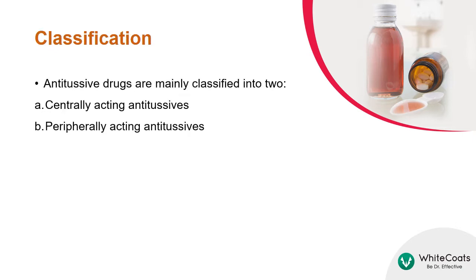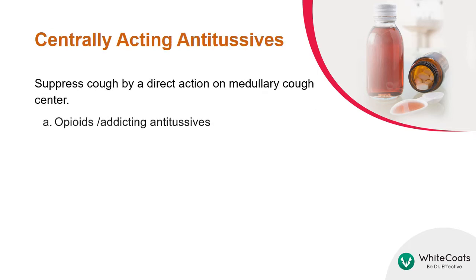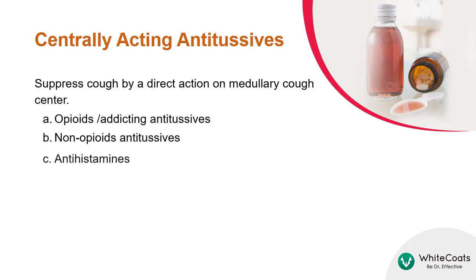Antitussive drugs are mainly classified into two classes: centrally acting antitussives and peripherally acting antitussives. Centrally acting antitussives suppress cough by a direct action on the medullary cough center in the brain stem. There are three types of these drugs: opioid antitussives, non-opioid antitussives, and antihistamines.